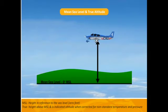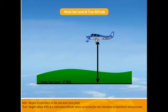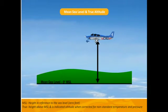Next we have mean sea level, or MSL, and true altitude. To understand true, we need to understand what MSL is. MSL is the height in reference to sea level instead of the ground below us. True altitude is the height above sea level and is your indicated altitude when corrected for non-standard temperature and pressure. So MSL is the height above the ocean, and true altitude is the height above the ocean when corrected for non-standard temperatures and pressure.